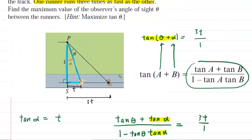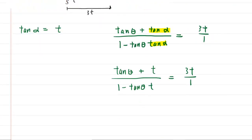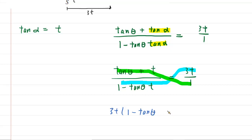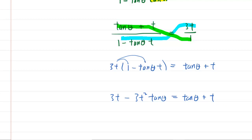The next thing we want to do is solve this equation for tangent of theta. We knew to do this because the question says: hint, maximize tangent of theta. Before we can maximize, we have to solve for it. The best way to do that is to cross multiply. Multiplying the blue terms gives 3t times (1 minus tangent of theta times t), and the green gives tangent of theta plus t. Now distribute this 3t: 3t times 1 is 3t, and 3t times t is 3t squared.